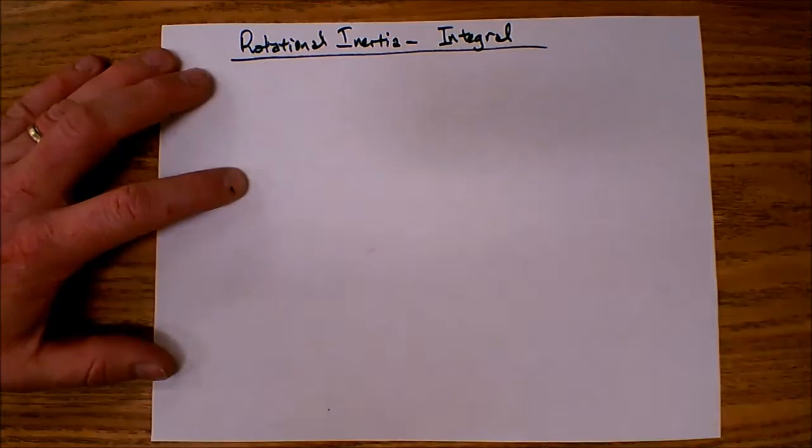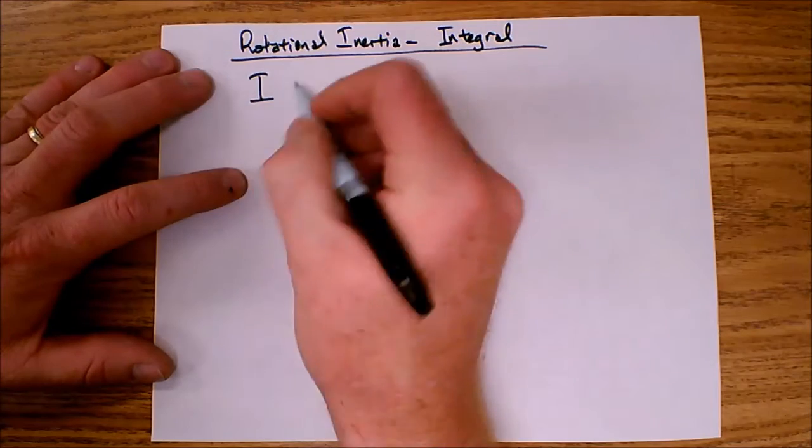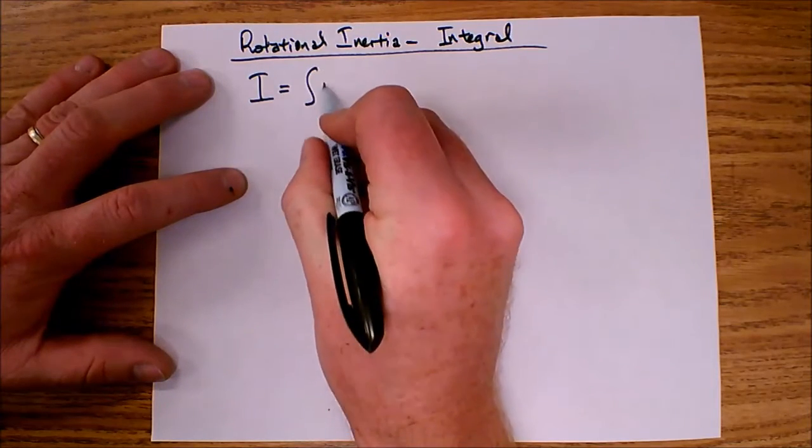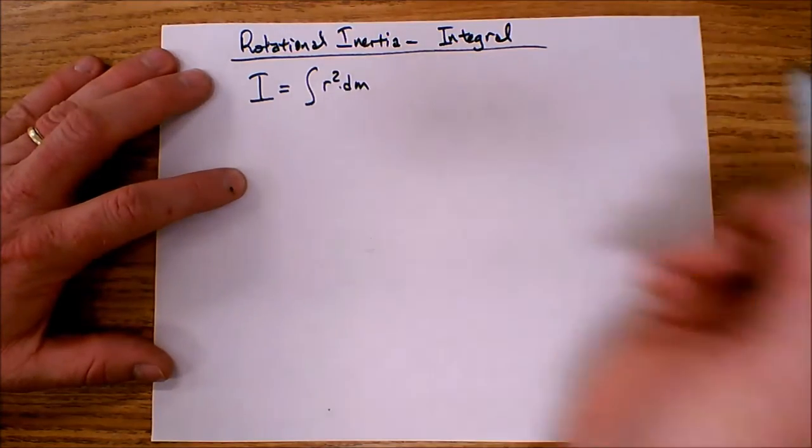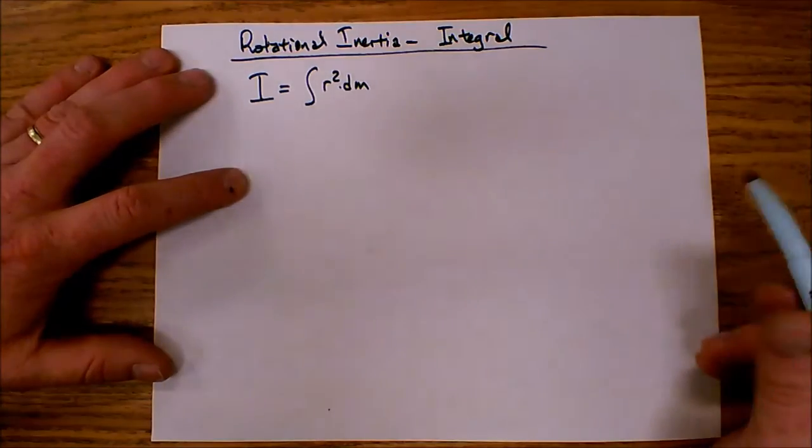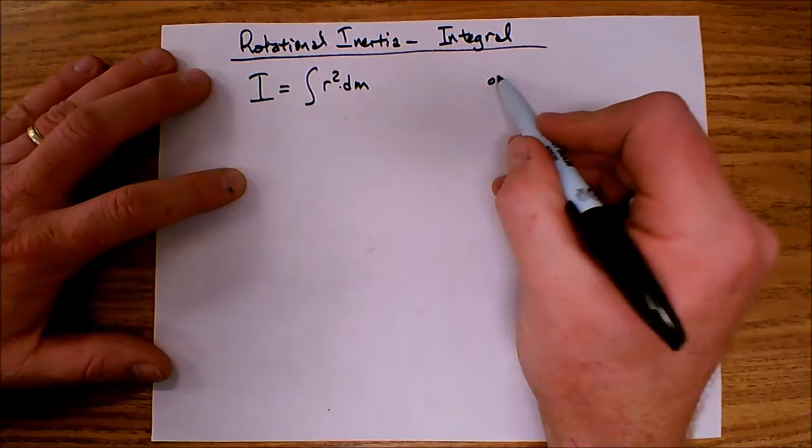Alright, let's talk about the rotational inertia integral. We know that the formula says that the inertia is equal to integral r-squared dm. But what does this mean, integral r-squared dm? To do this, let's take a look at a uniform thin rod.